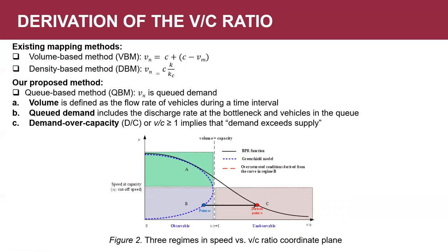In existing literature, there are some methods to achieve this mapping. Volume-based methods directly reflect point M to point N using V-over-C equals one as a pivot in a symmetric fashion. The density-based method uses K over K-critical instead of V-over-C in the BPR function. In this paper, we propose a Q-based method. We distinguish the concept of volume and demand, or Q-demand. The V-over-C ratio is viewed as demand over capacity, so V-over-C larger than one directly implies demand exceeds supply on the link.